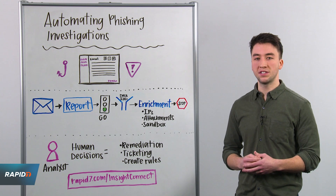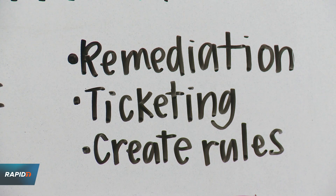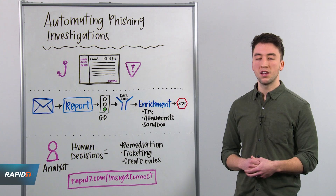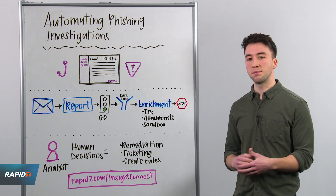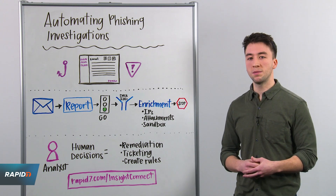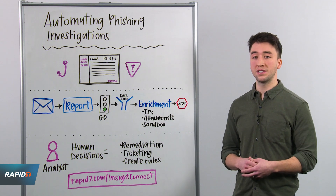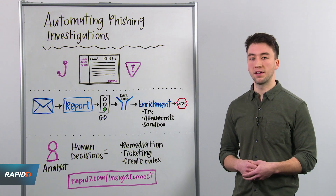Once the analyst receives the alert, they can make a decision on how to proceed. A source solution helps teams automate the remediation process as well. If the analyst chooses the remediation path, you may want to delete the original email, delete matching messages across your email server, and even set up a rule to feed those IOCs back into a firewall or email security gateway.